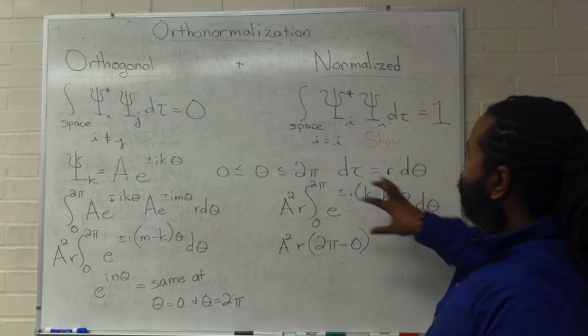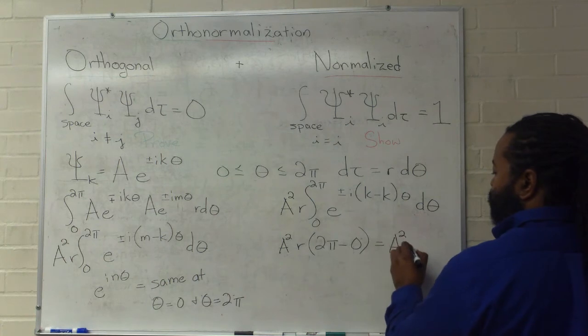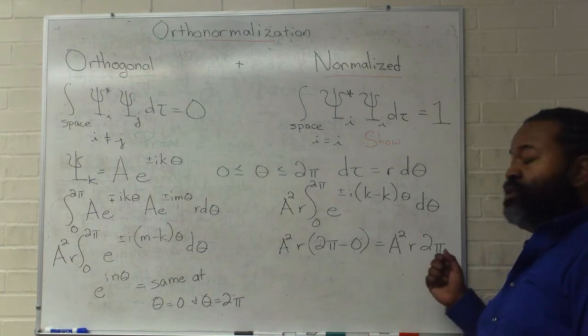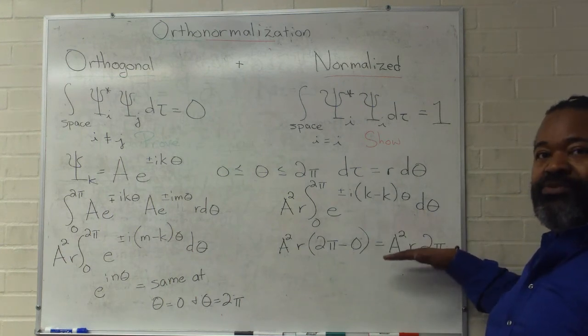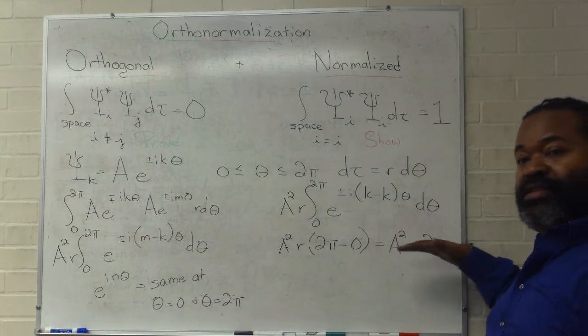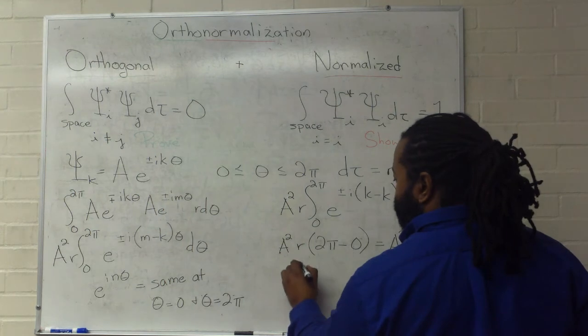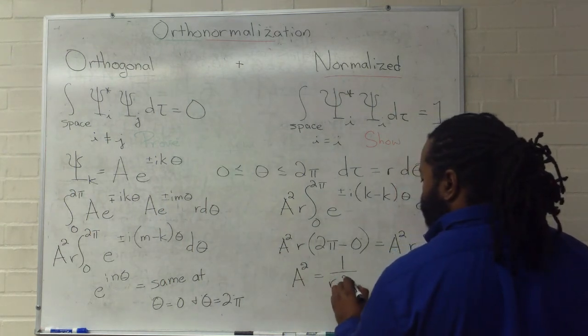And so, the value of this integral, then, is a squared r times 2 pi. And at this point, the thing that we need to do is figure out how to make this equal to 1. The thing we can do to make this equal to 1 is to make this argument, that a squared must be equal to 1 over r times 2 pi.